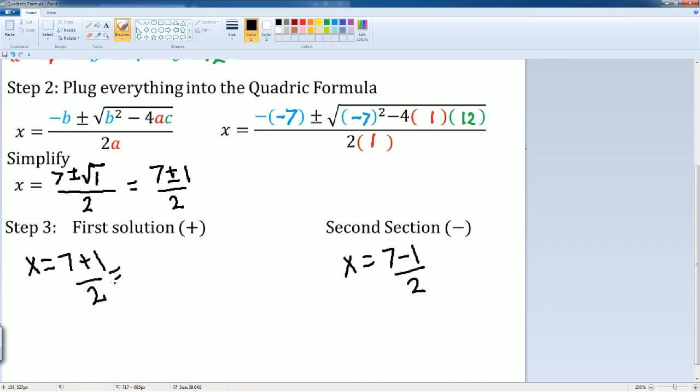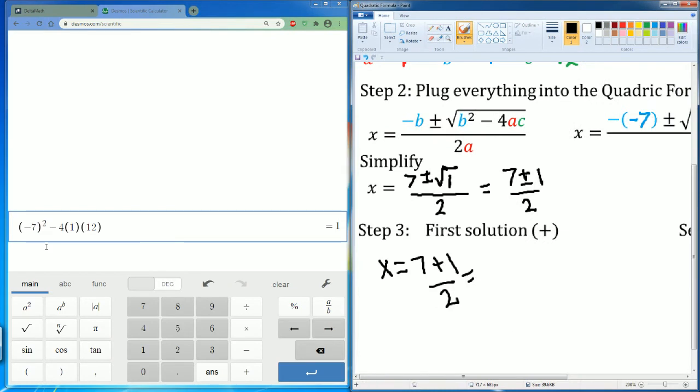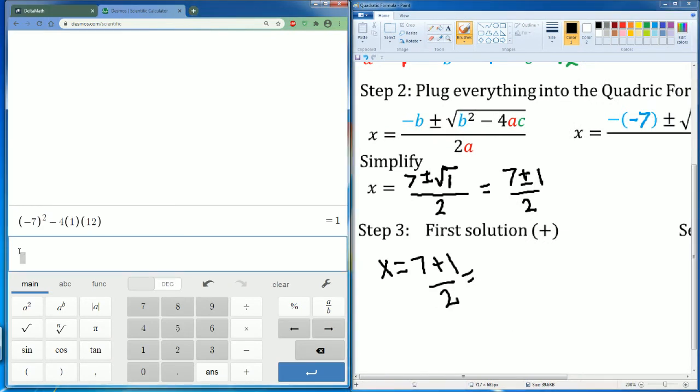So 7 plus 1 divided by 2. Again, I'm going to make my life easy by just plugging it into Desmos. 7 plus 1 divided by 2. That got me a 4.